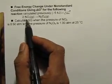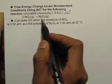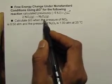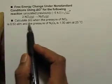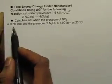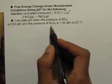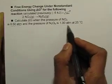reaction is 2 moles of nitrogen dioxide gas converting into dinitrogen tetraoxide gas. We have to calculate delta G when the pressure of NO₂ is 0.5 atmosphere and the pressure of N₂O₄ is 1 atmosphere at 25 degrees Celsius.